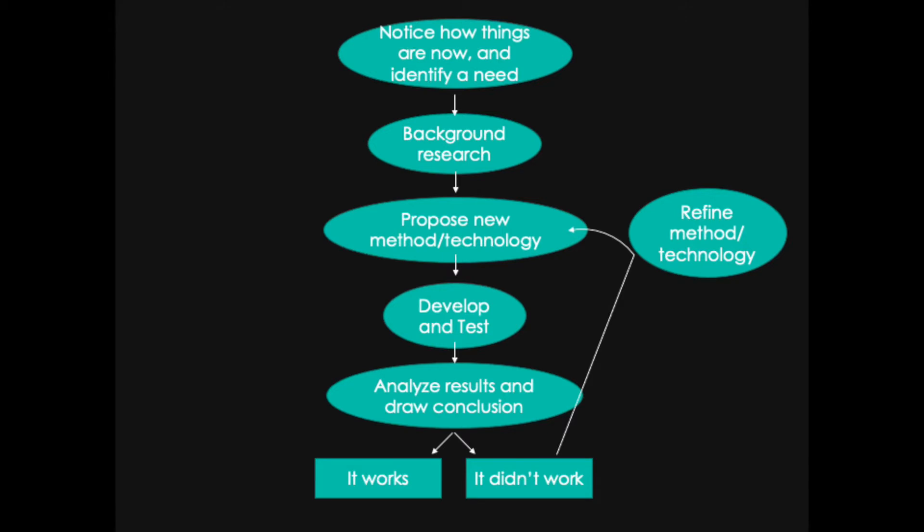Now this is a diagram for hypothesis-driven research. Not all scientific research is hypothesis driven. Some of it is driven by technology development and other kinds of development types of studies, knowledge discovery for example, and a hypothesis just doesn't work for those types of inquiries. So we'll have another structure as well. And this structure is for those purpose-driven types of experiments, and it's very similar. You notice how things are now and you identify a need. You do background research. You propose a new method or technology. You develop a way to solve the problem and you test that method or technology. Then you analyze the results and draw a conclusion. Either it works or it didn't work. If it didn't work you go back through this loop to propose a new method or technology and go through the process again.